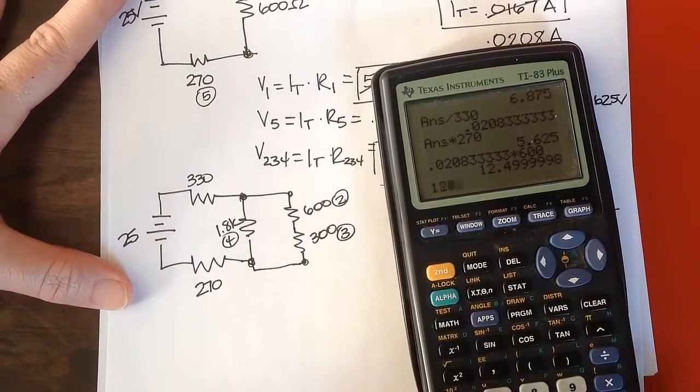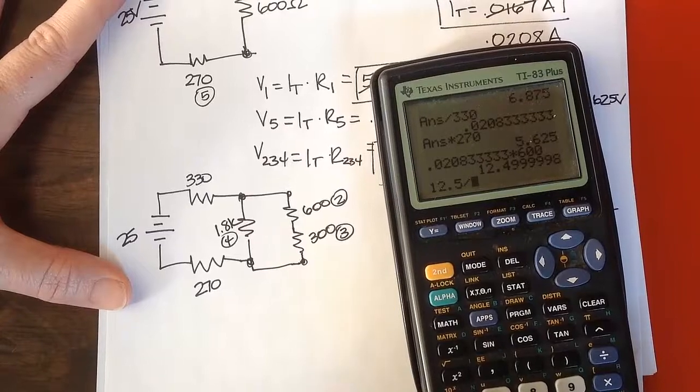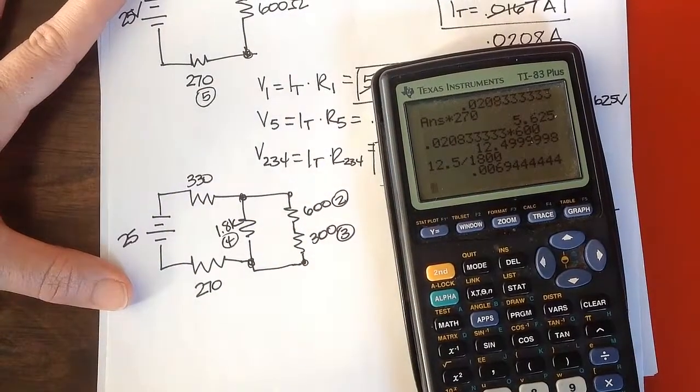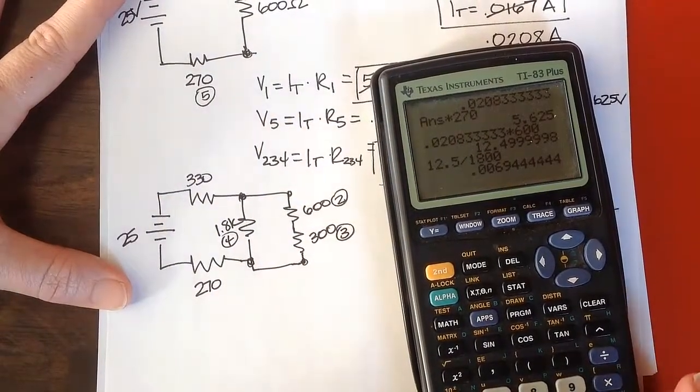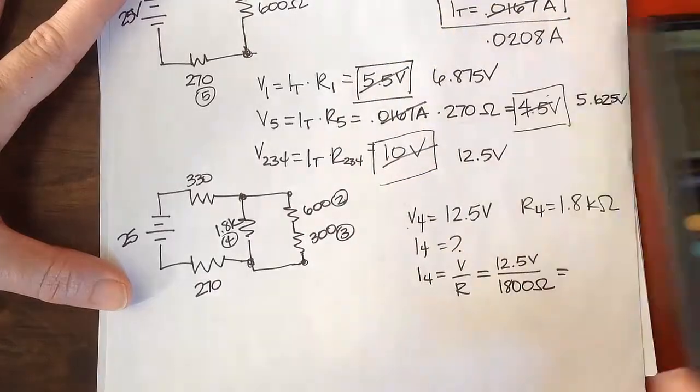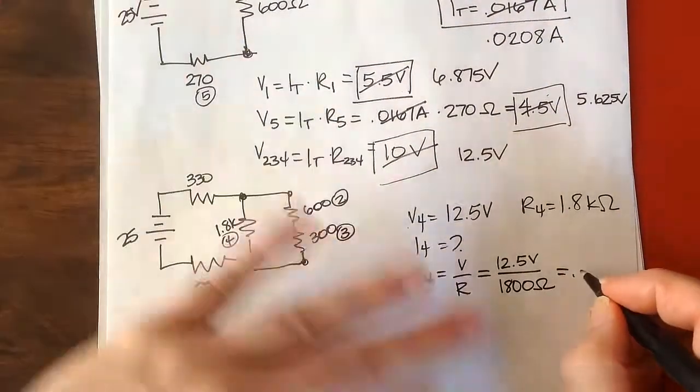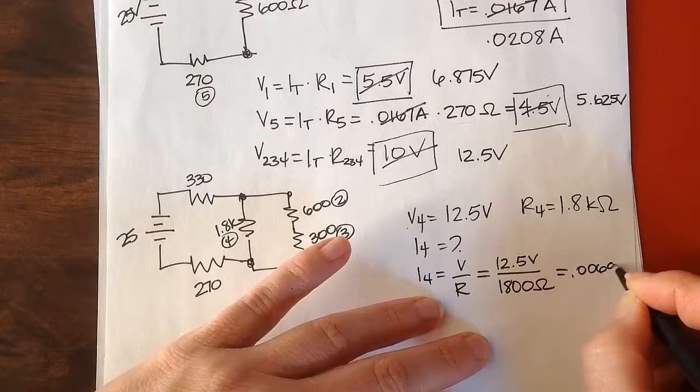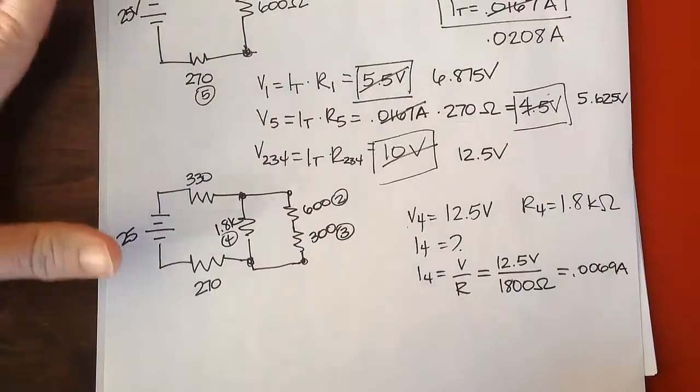And Ohm's law tells us that I is equal to V over R. And so that's going to be 12.5 volts divided by the resistance, 1800 ohms. So 12.5 divided by 1800, and I get 0.0069 amps.